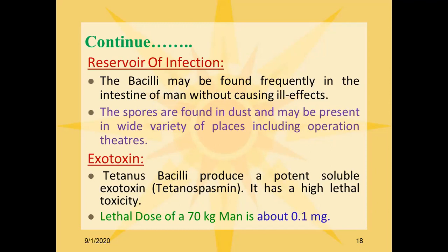The tetanus bacillus produces a potent soluble toxin, tetanospasmin, which has a high lethal toxicity. The lethal dose for a 70 kg adult person is about 0.1 mg.